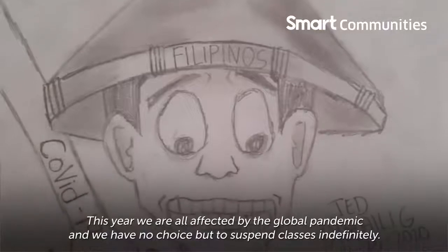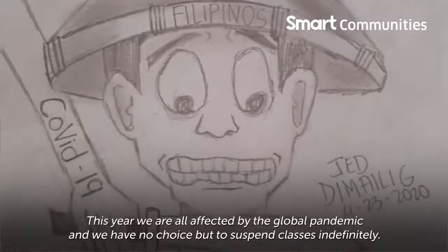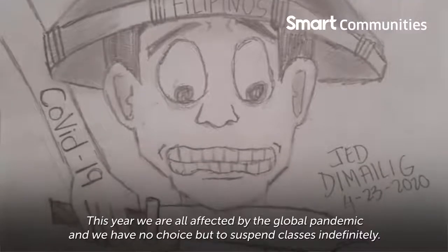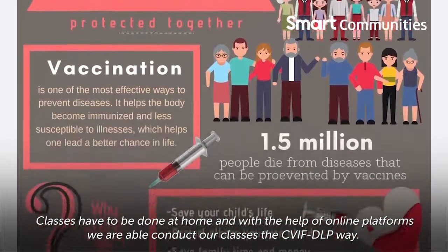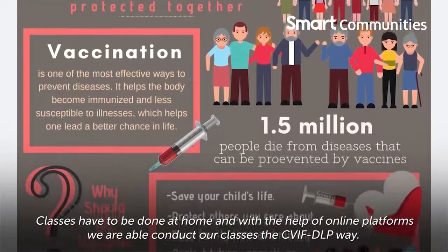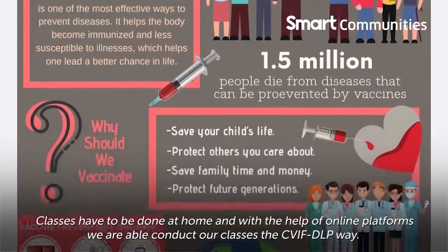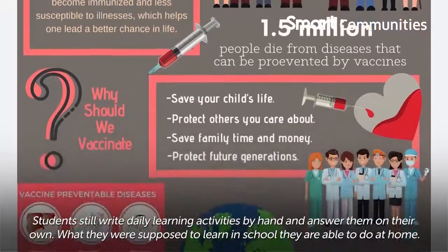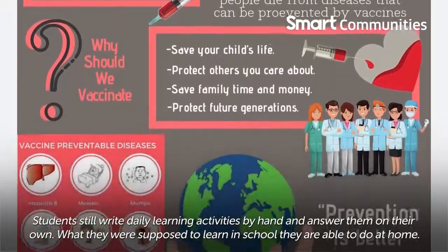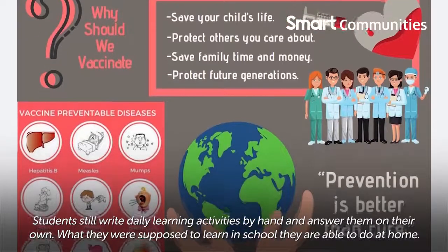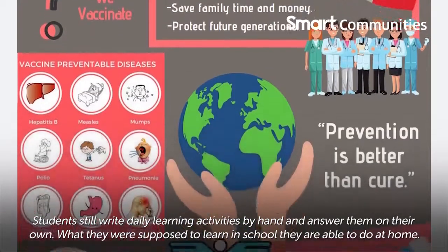This year, we are all affected by the global pandemic, and we have no choice but to suspend classes indefinitely. Classes have to be done at home, and with the help of online platforms, we are able to conduct our classes the CBIF DLP way. Students still write daily learning activities by hand and answer them on their own. What they were supposed to learn in school, they are able to do at home.